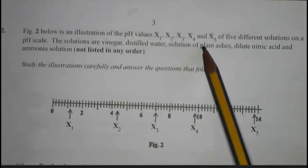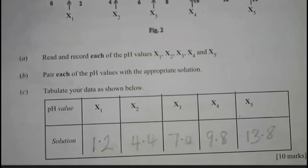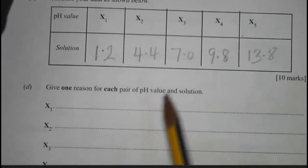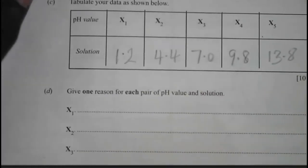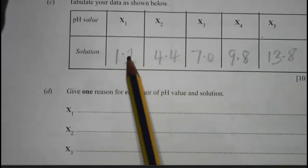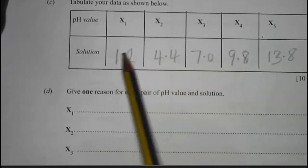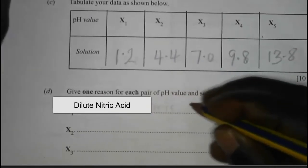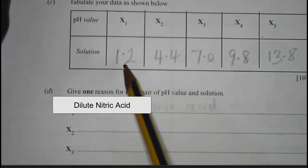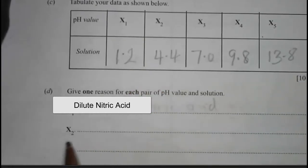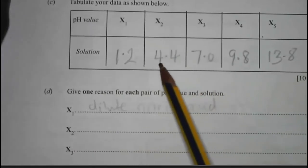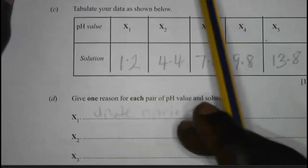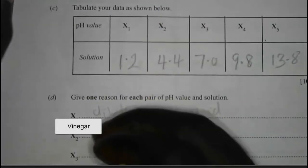Now for the reasons for each pairing: X1 is dilute nitric acid because it has a low pH of 1.2 — it is a strongly acidic solution. X2 is vinegar because it has a pH of 4.4, making it a weakly acidic solution, and vinegar contains ethanoic acid, a weak acid.